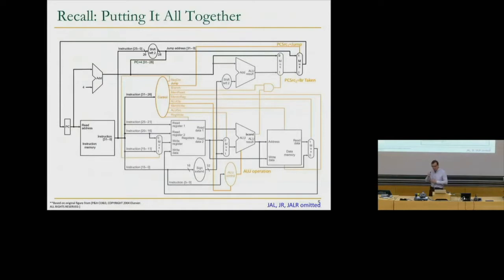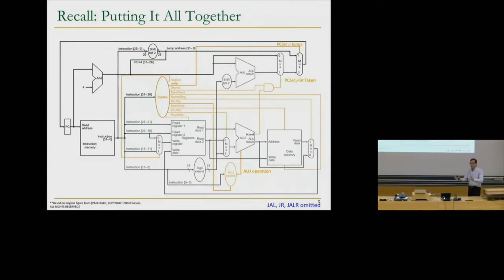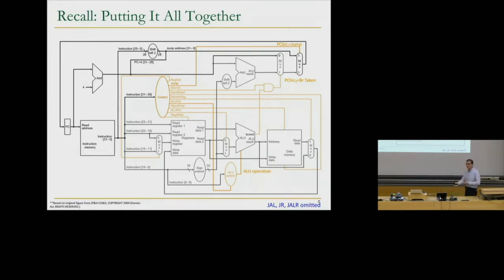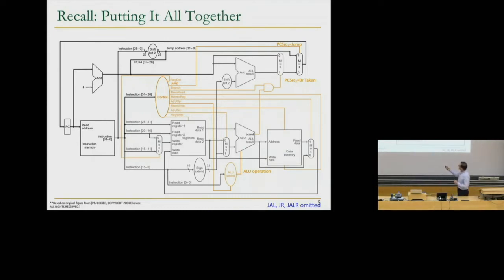This is where we left off last time. We basically designed a simple MIPS single-cycle microarchitecture — this is a complete single-cycle microarchitecture, assuming you omit some instructions. We designed the data path from the fundamental elements, then designed every single different type of instruction for the data path, added the control signals. Control signals essentially dictate what the data path elements do to the data flowing, such that the instruction is executed as the programmer expects.